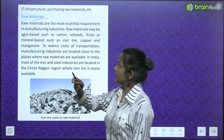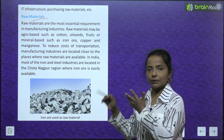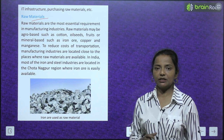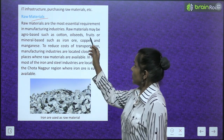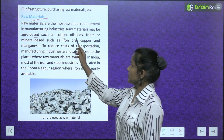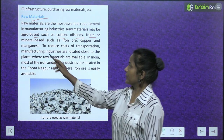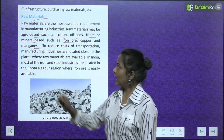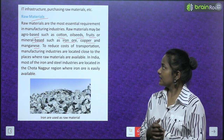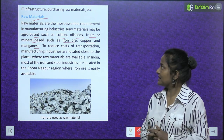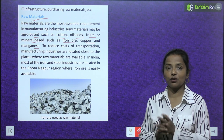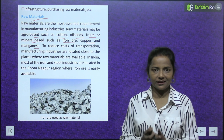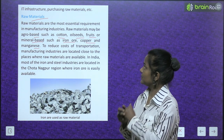Next comes raw materials. Raw materials are the most essential requirement in manufacturing industries. Raw materials may be agro-based such as cotton, oil seeds, fruits, or mineral-based such as iron ore, copper and manganese. Without raw material, nothing can be produced — so raw material is very essential.